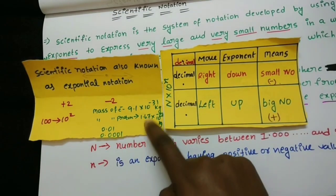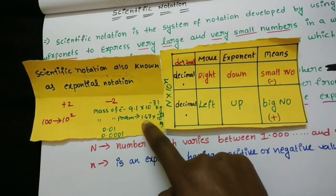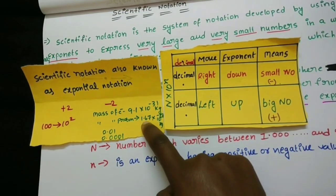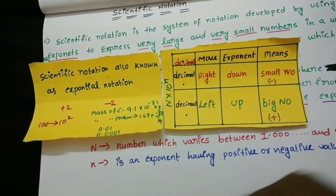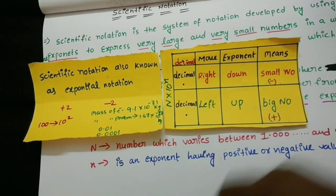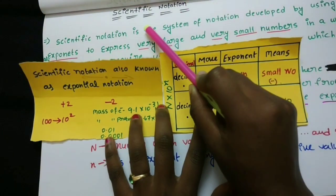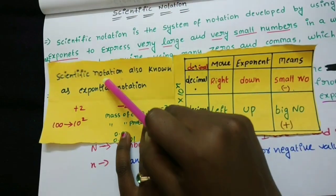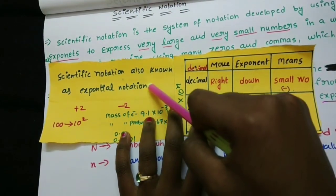If you have negative exponents and positive exponents, this explains whether a number is small or large. Let's take a look at scientific notation and exponential notation.